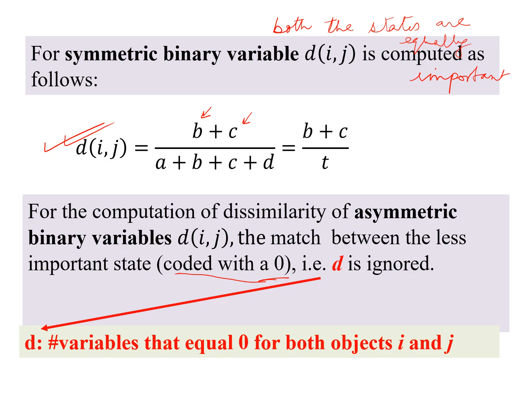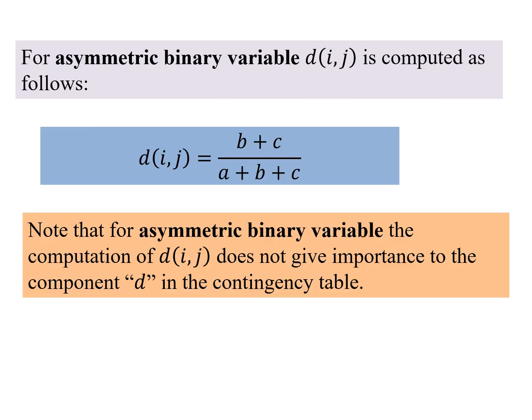So d, what is d, is the number of variables that equals 0 for both objects i and j. So we say d is not important and we can ignore it. So how do we write it? For asymmetric binary variable, d(i,j) is written as b plus c divided by a plus b plus c. See the d is missing here. So this d is not included in the computation of the contingency table.